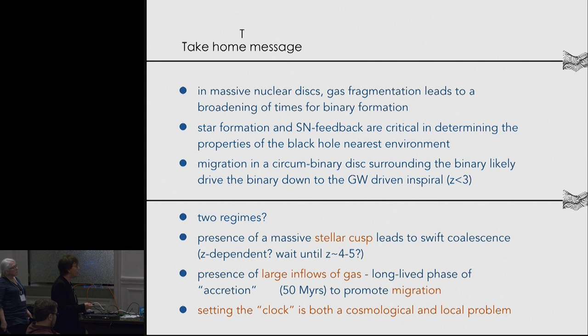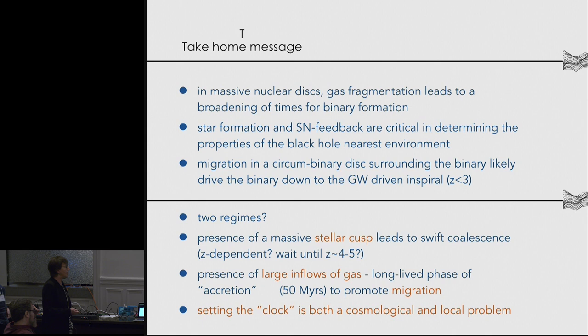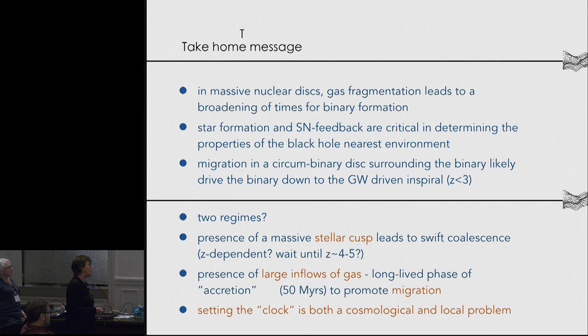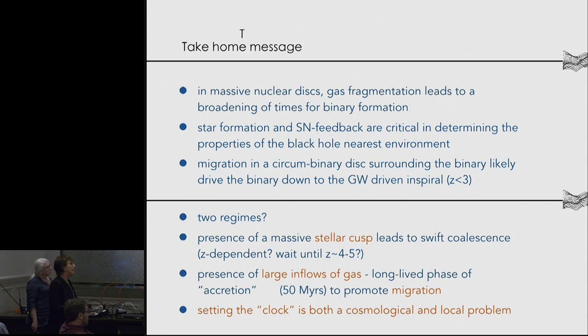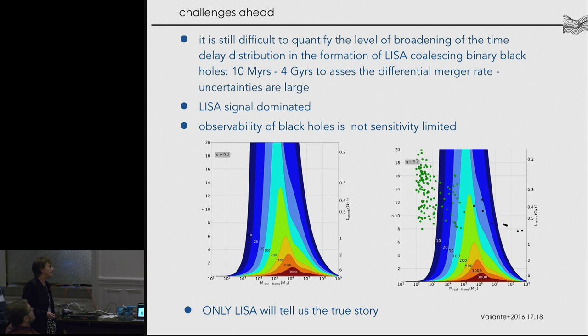It is likely we have two regimes: we need the presence of a massive stellar cusp to lead to swift coalescence, hopefully at high redshift mergers; and we need gas, which forms stars that help make the stellar cusp steeper, while also guaranteeing migration in the final phase. Setting the clock is both a cosmological and a local problem, and we will need a survey of higher-resolution simulations. The last word will be decided by ELISA, which will really tell us the full story.